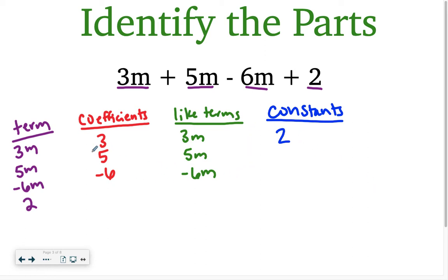You can list them however you want. You can list them like I did here where I just made 4 columns. Some people like to make a box and write them in the box. Like the terms, coefficients, constants, like terms. Just make sure you have the labels in each box.